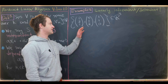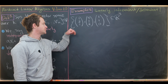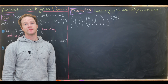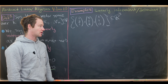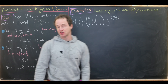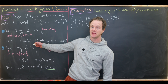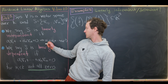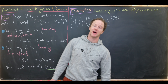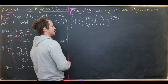Next we look at three vectors in R3: [1,2,1], [0,1,2], and [1,1,0]. We set up a linear combination x·[1,2,1] + y·[0,1,2] + z·[1,1,0] = 0 and determine whether the only solution is x = y = z = 0.